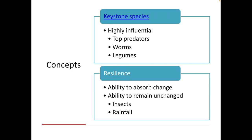Some key concepts here are keystone species and resilience. Keystone species are highly influential, and when they are no longer present, it dramatically changes everything about that environment. We're often talking about things like top predators, worms, and legumes — things that dramatically change the environment when absent. If you click the link to the video, you'll get a short clip on how wolves dramatically changed Yellowstone — how bringing wolves back to Yellowstone Park changed everything about the park.